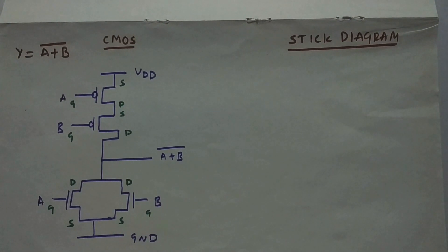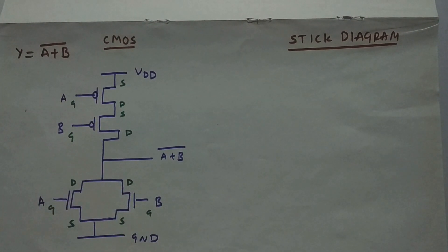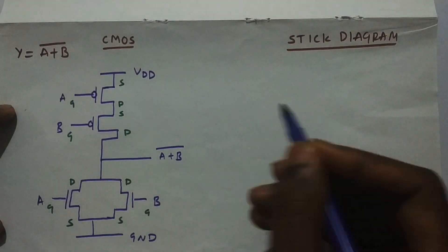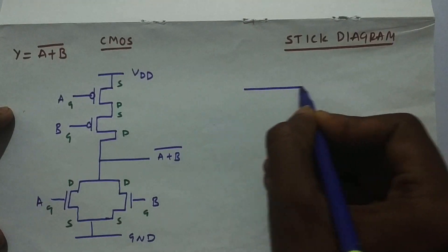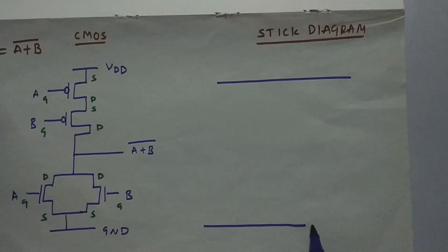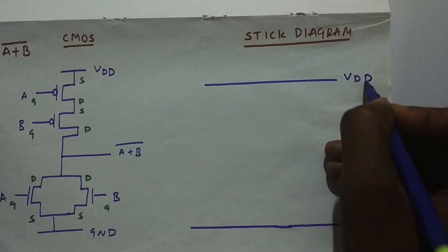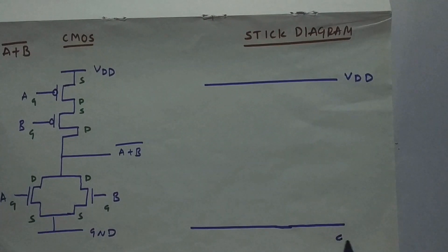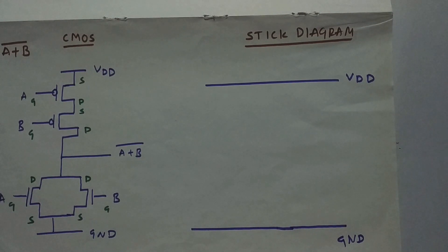Now let's go to the stick diagram. First, draw VDD and ground. I'm taking blue color for both VDD and ground lines.